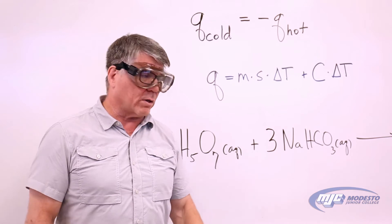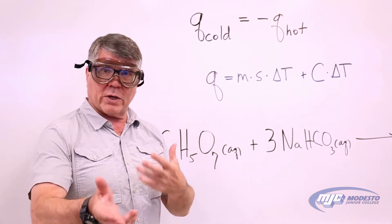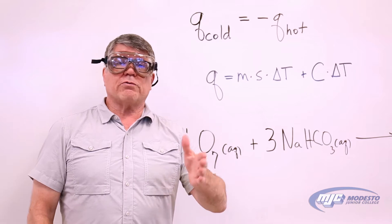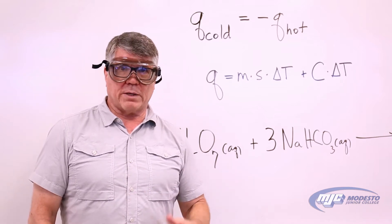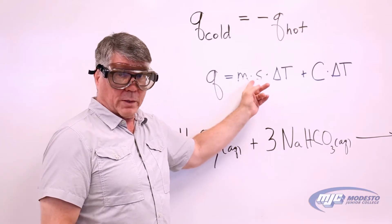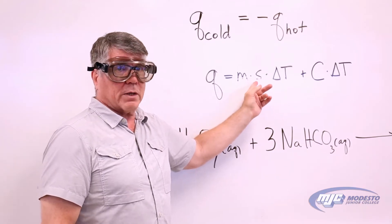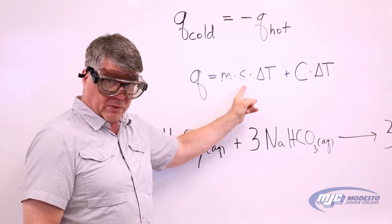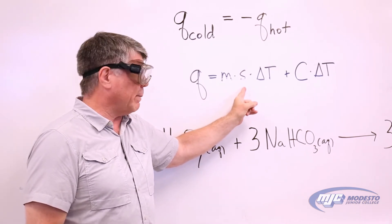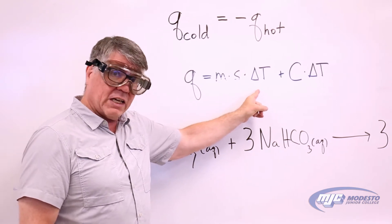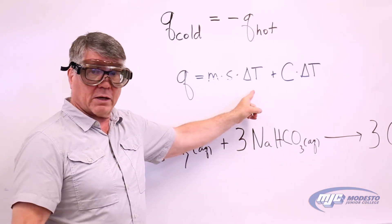We can go a little bit farther because we have an equation for Q. The thermal energy transferred into or out of an object can be calculated using Q = mSΔT. If we know the mass of the object, the specific heat capacity S, and ΔT — the change in temperature of that object, final minus initial — we can calculate Q.